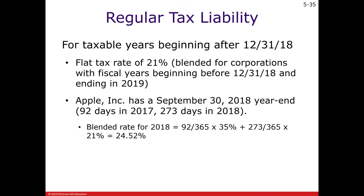Now let's talk about calculating the actual amount of tax. Things have been simplified for 2018 — we just take our taxable income and multiply it by a flat 21%. It used to be a graduated rate in past years, going up to 35% or even higher. Now it's just 21%. There is a phase-in during 2018: if your year ended during 2018, some income is taxed at 21% and the rest at graduated rates. But for a full calendar year ending December 31, 2018, all taxable income is taxed at 21%.